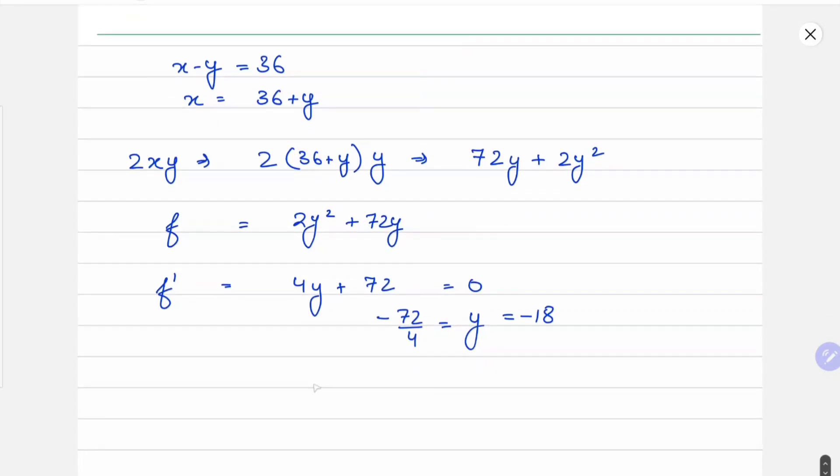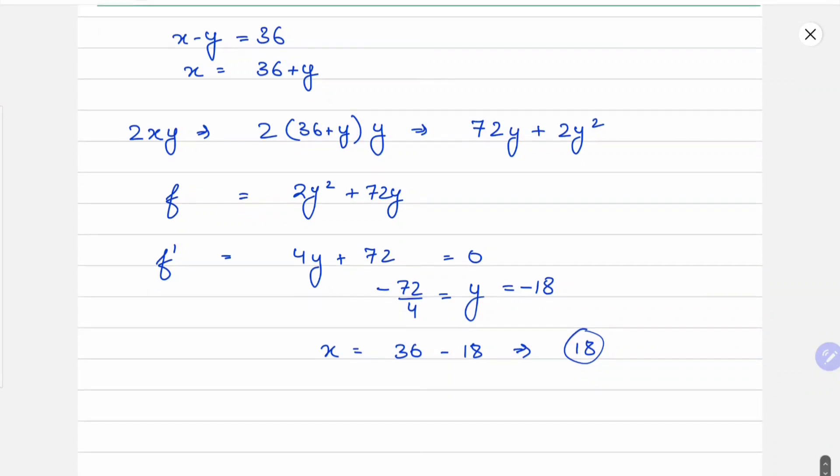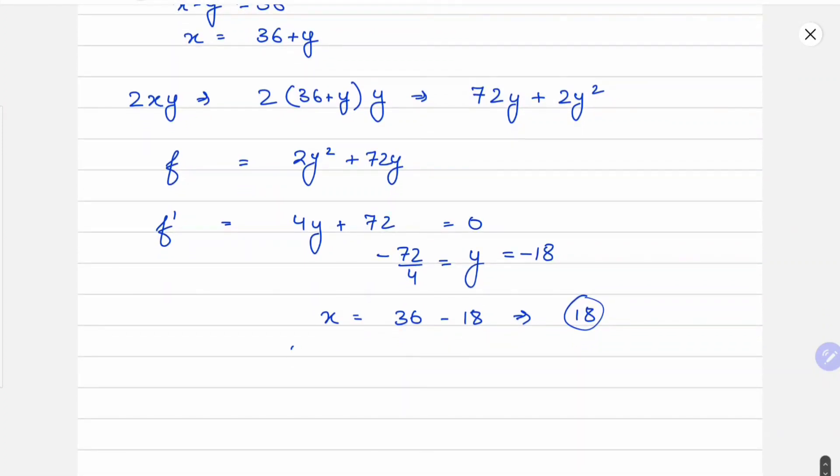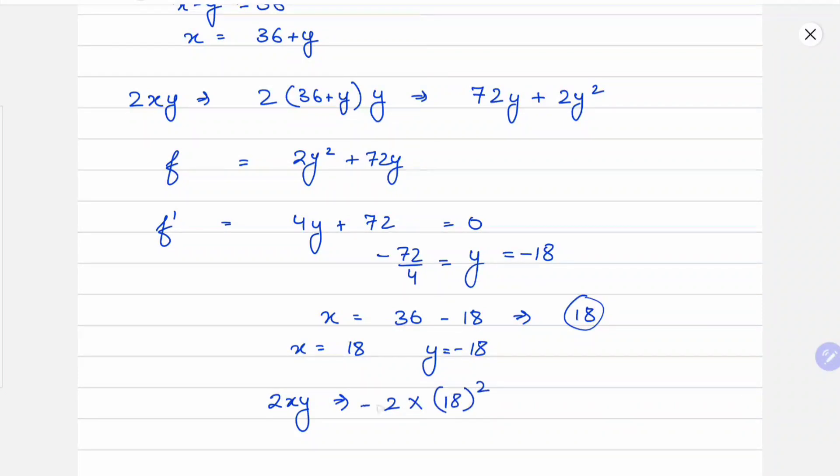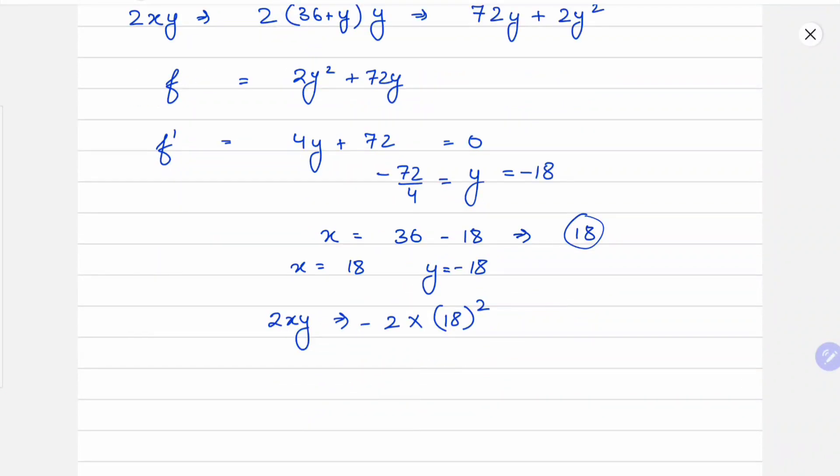So if y is minus 18, we get x equals 36 plus y, that is 36 minus 18, which gives us x equals 18. So x equals 18 and y equals minus 18 gives us 2xy equals 2 into 18 whole squared negative, and this equals minus 648. So the answer of this question will be minus 648.